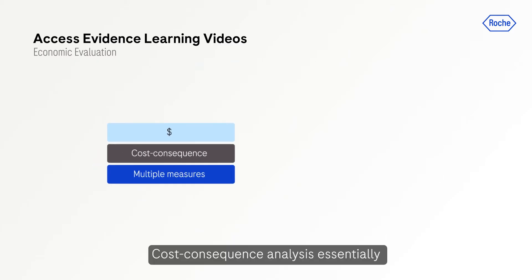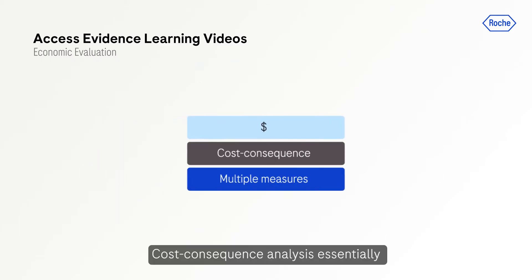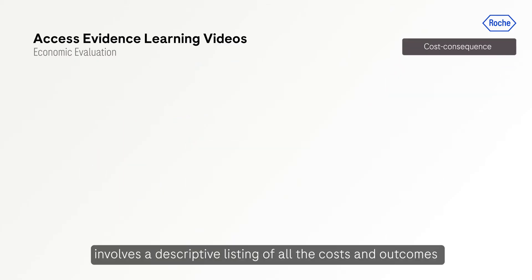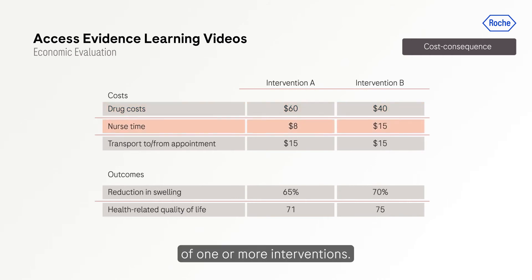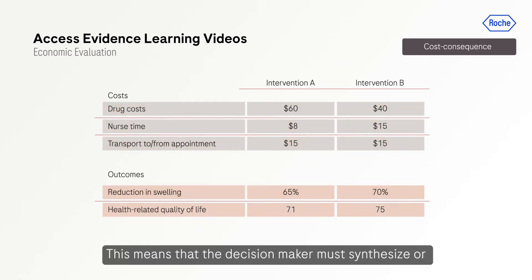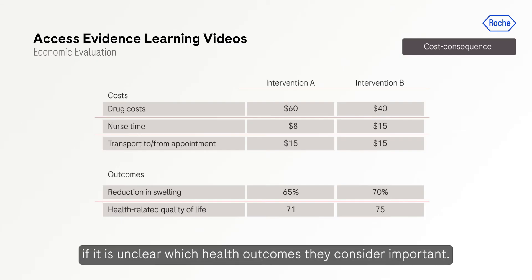Cost-consequence analysis involves a descriptive listing of all the costs and outcomes of one or more interventions. This means the decision maker must synthesize the information themselves, but it may be useful if it is unclear which health outcome they consider important.